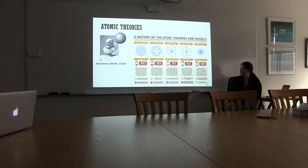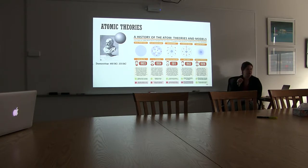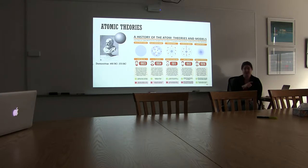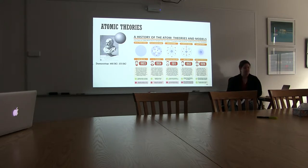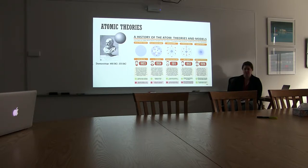Then along came Ernest Rutherford, who did the gold foil experiment. He shot little alpha particles — radioactive particles — at a piece of gold foil, thinking they would just go straight through. But instead, some were deflected right back at him. These positively charged alpha particles were hitting something positively charged and repelling. It only happened once in a while. What he found was a dense nucleus that held all the positive charge of the atom — the protons — with the electrons on the outside.